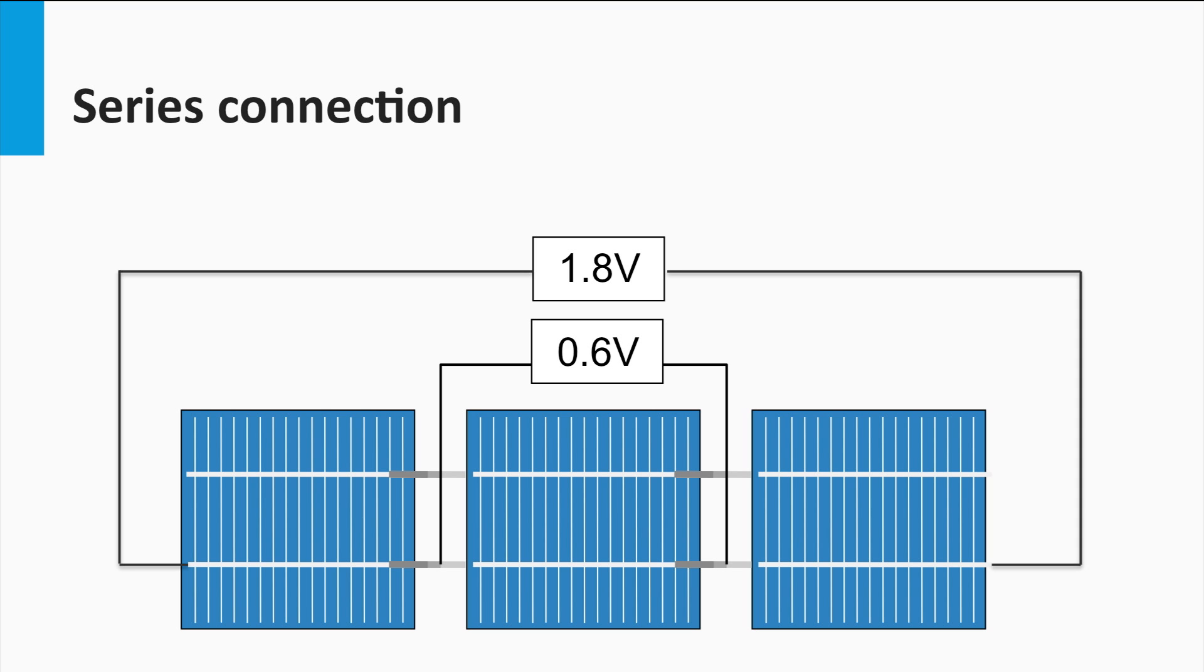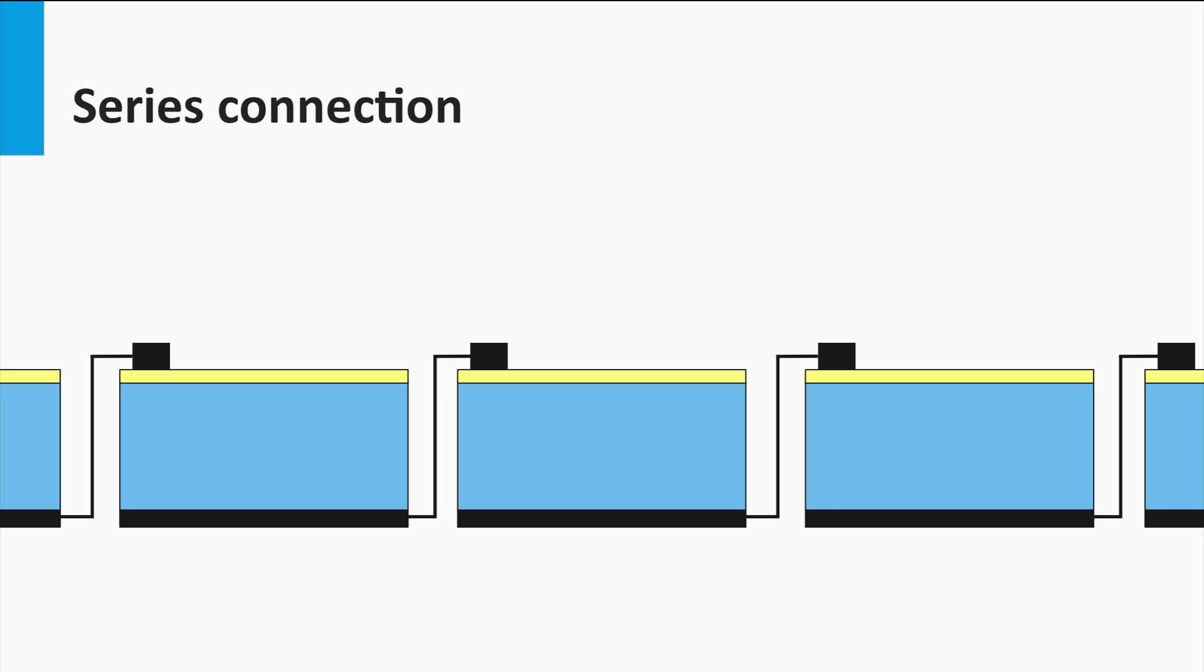If we look at the classical front metal grid, it means that the bus bars at the front side have to be connected with the back contact of the neighboring cell. In this slide, you see a cross-sectional view of a few solar cells connected in series.